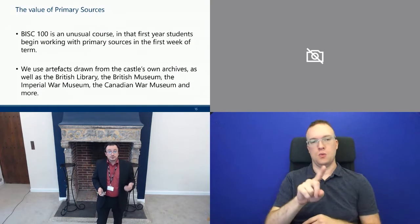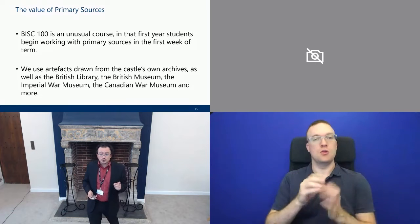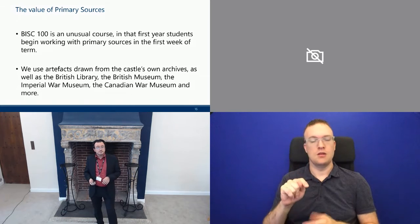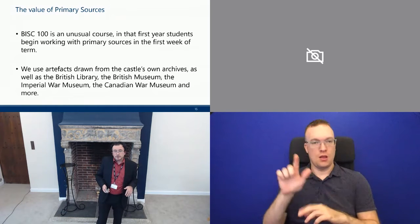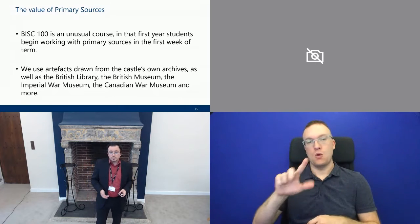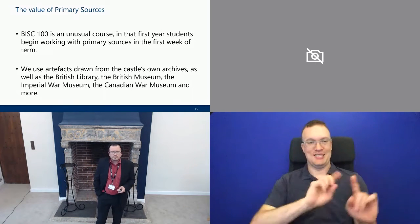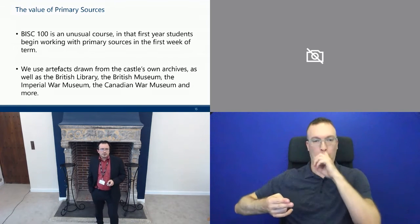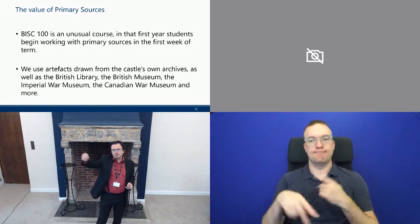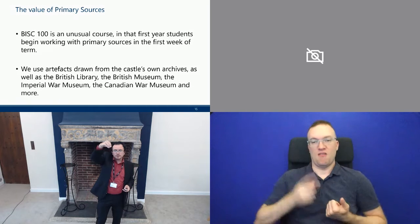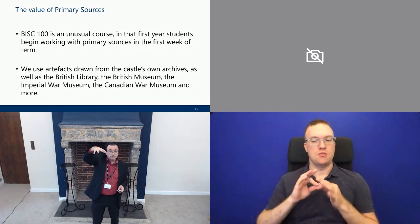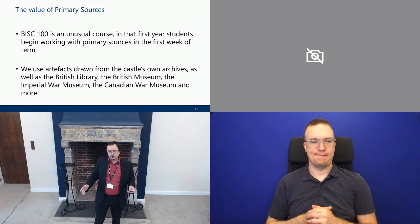So the value of primary sources: BISC 100 is an unusual course in that first-year students begin working with primary sources in the first week of term. We use artifacts drawn from the castle's own archives, as well as the British Library, the British Museum, the Imperial War Museum, the Canadian War Museum, and much more. We use three different methods of history. The first is a kind of military-political history — what was life like for those at the top, important people who made important decisions. That's a history-from-above method — Winston Churchill made this decision, Napoleon did this.